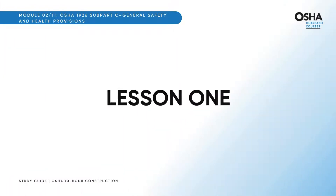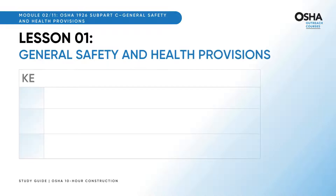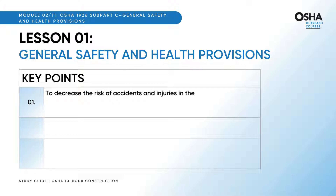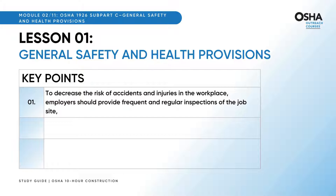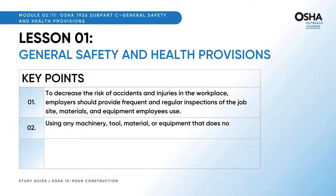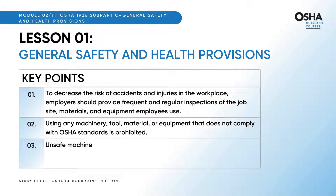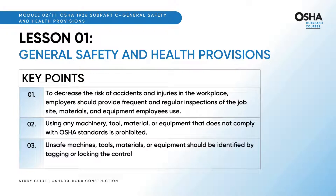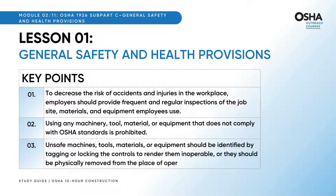Let's start with the first lesson, General Safety and Health Provisions. To decrease the risk of accidents and injuries in the workplace, employers should provide frequent and regular inspections of the job site, materials, and equipment employees use. Using any machinery, tool, material, or equipment that does not comply with OSHA standards is prohibited. Unsafe machines, tools, materials, or equipment should be identified by tagging or locking the controls to render them inoperable, or they should be physically removed from the place of operation.